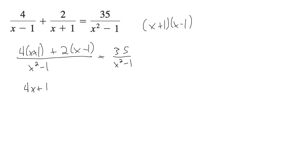So on top I get 4x plus 4 plus 2x minus 2, all over x squared minus 1, is equal to 35 over x squared minus 1.